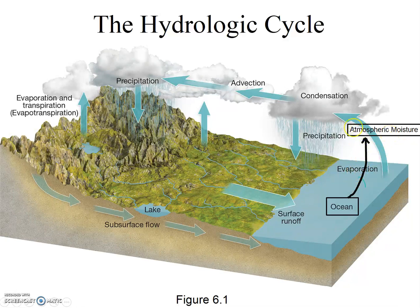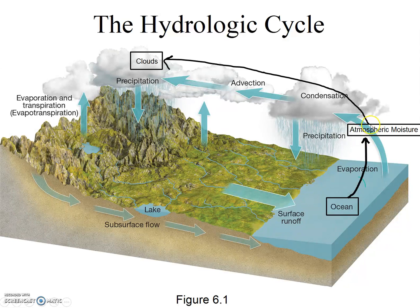Notably, evaporation does not lead directly to clouds — it leads to atmospheric moisture, the moisture in the air around us. From there, condensation takes atmospheric moisture and brings it to another pool, which I've labeled here as clouds. You can imagine what would occur next. Precipitation comes from clouds down to surface water, etc.